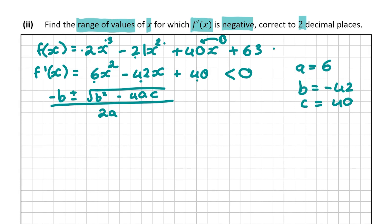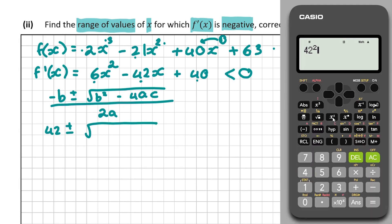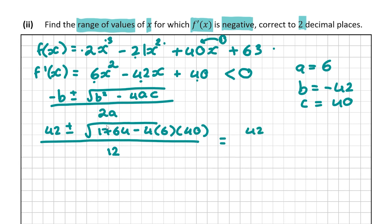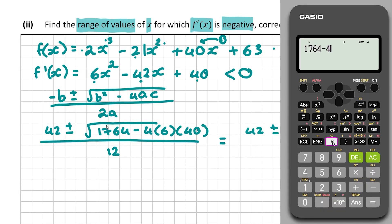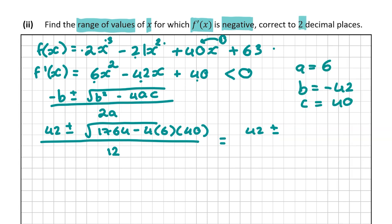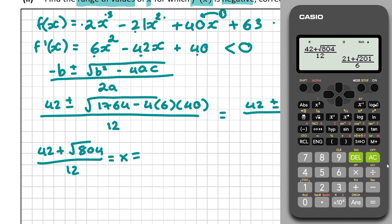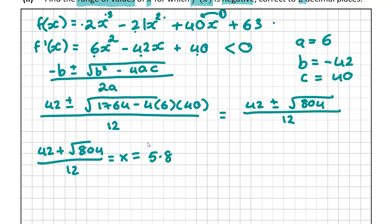Filling this out: minus b is minus minus 42, which is just 42. Plus or minus b squared — 42 squared is 1764. Minus 4 multiplied by a which is 6, multiplied by c which is 40. Divided by 2a which is 2 times 6 equals 12. Working out what's inside the square root: that gives 804. So we have 42 plus or minus the square root of 804, all divided by 12.